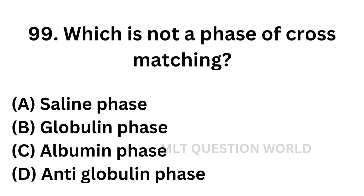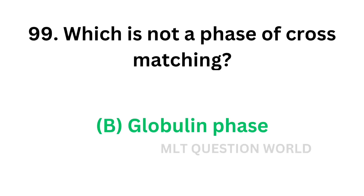Question number 99: Which is not a phase of cross matching? Option A: saline phase. Option B: anti-globulin phase. Option C: albumin phase. Option D: globulin phase. Saline phase, albumin phase, and anti-globulin phase are the phases of cross matching. But globulin phase is not a phase of cross matching. So the correct answer is Option D, globulin phase.